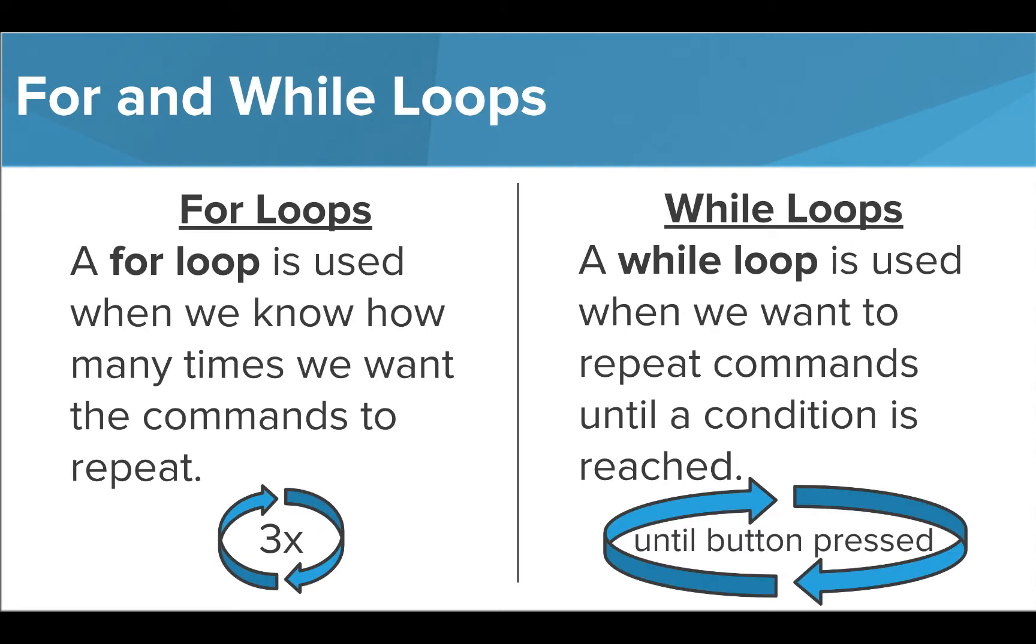There are two different types of loops that we use in different situations. We use a for loop when we know the amount of times we want to repeat commands. For example, we could repeat commands three times. We use a while loop when we want to repeat commands until a certain condition is reached. For example, we could repeat commands until a button is pressed.